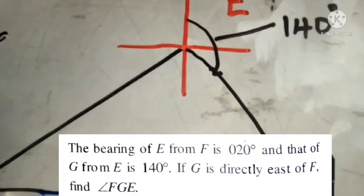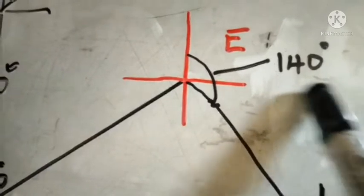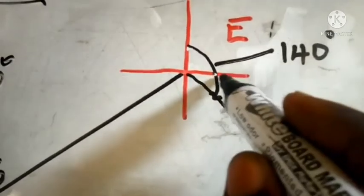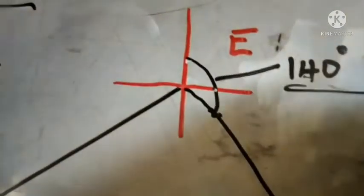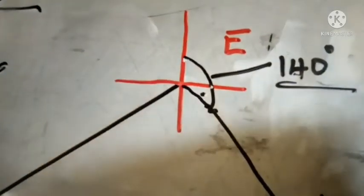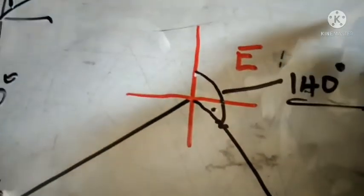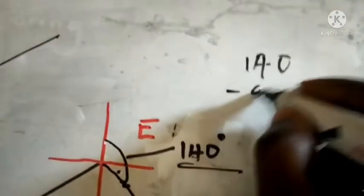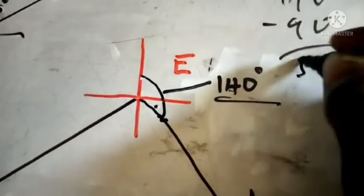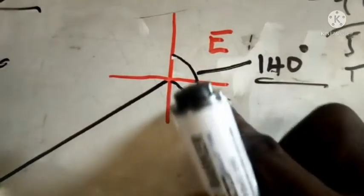Now the bearing of G from E is 140 degrees, meaning we are moving from E. So we draw the cardinal point at E and measure 140 degrees from north. From north to east is 90°, and we are given 140°, so 140 minus 90 gives us 50°. That angle below the east direction is 50 degrees.